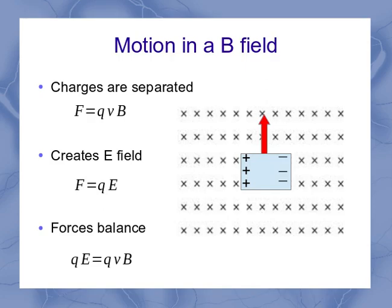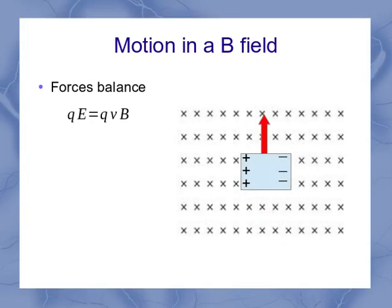So let's focus in on that equation here. So we've got our balanced forces, QE equals QVB. We notice right away that it doesn't matter what the Qs are. But we will develop an electric field, which is equal to the velocity times the strength of the magnetic field.